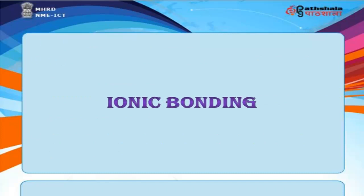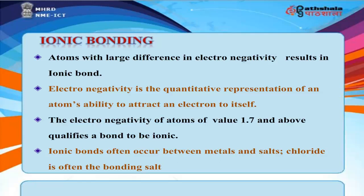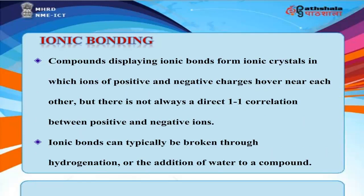Atoms with a large difference in electronegativity form an ionic bond. Electronegativity is the quantitative representation of an atom's ability to attract an electron to itself. An electronegativity difference of 1.7 and above qualifies a bond as ionic. Ionic bonds often occur between metals and salts, with chloride being a common bonding salt. Compounds displaying ionic bonds form ionic crystals in which ions of positive and negative charges hover near each other, but there is not always a direct one-to-one correlation between positive and negative ions.